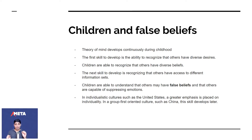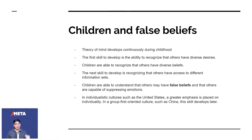Theory of mind forms typically during childhood and continues developing during childhood. The first skill to develop in children is the ability to recognize that others have diverse desires.